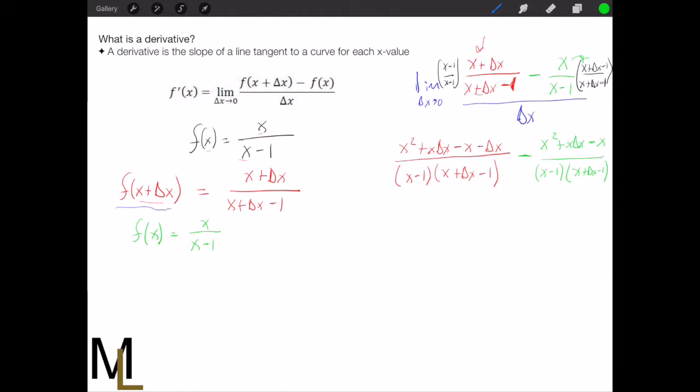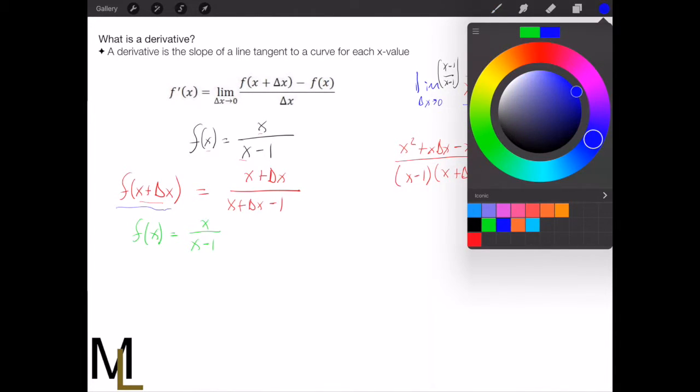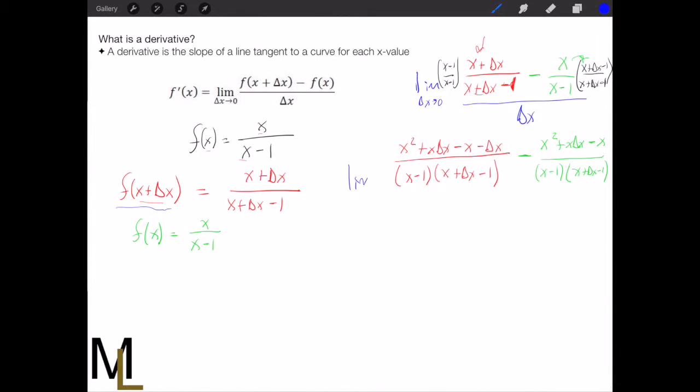So you can see now these two guys have, oh, let's not forget just to be complete: limit of delta x goes to zero all divided by delta x. Okay.